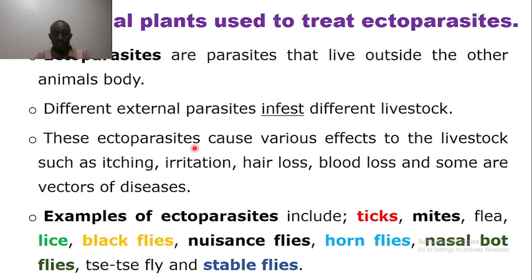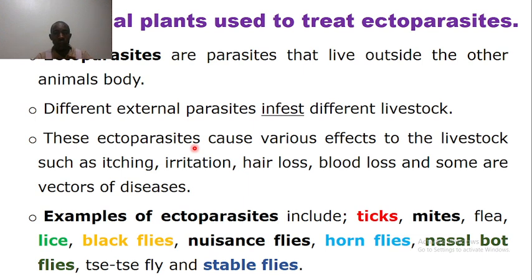Different diseases affect different animals or livestock. In Uganda, most common diseases are caused by parasites. These parasites are divided into two: ectoparasites, which live on the external part of the body, and endoparasites, which live inside. For example, ectoparasites include ticks, lice, mites, and fleas.